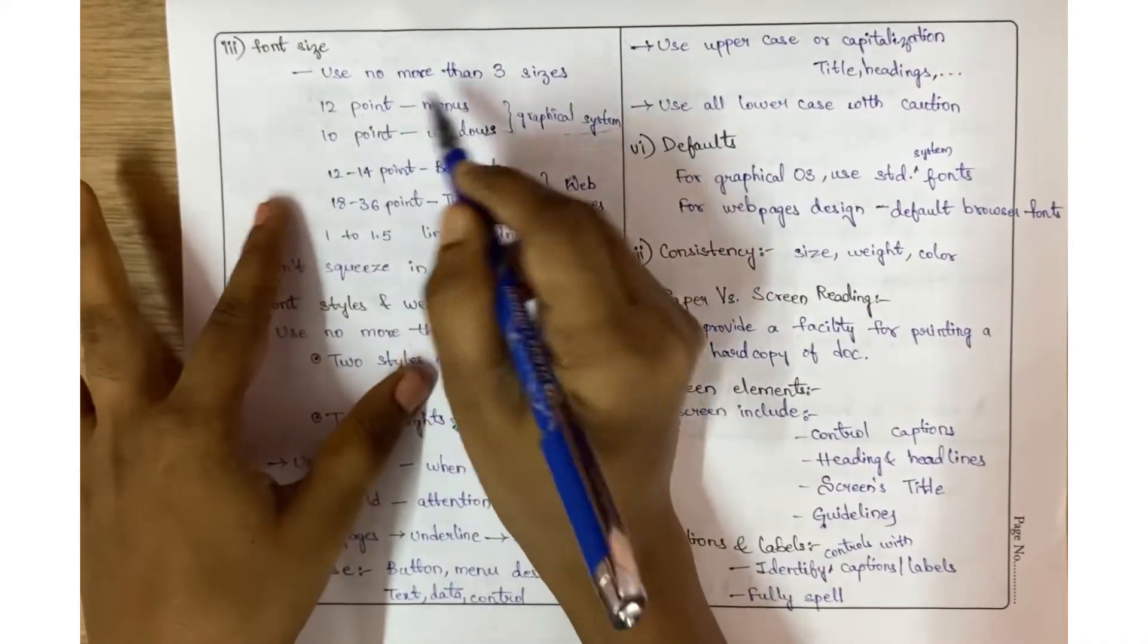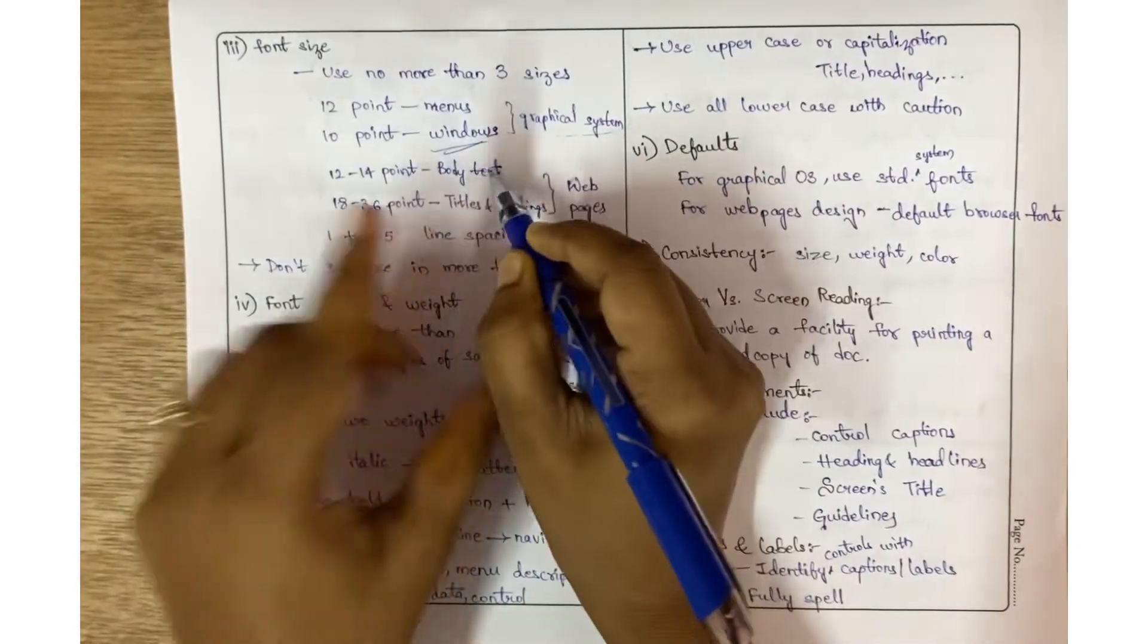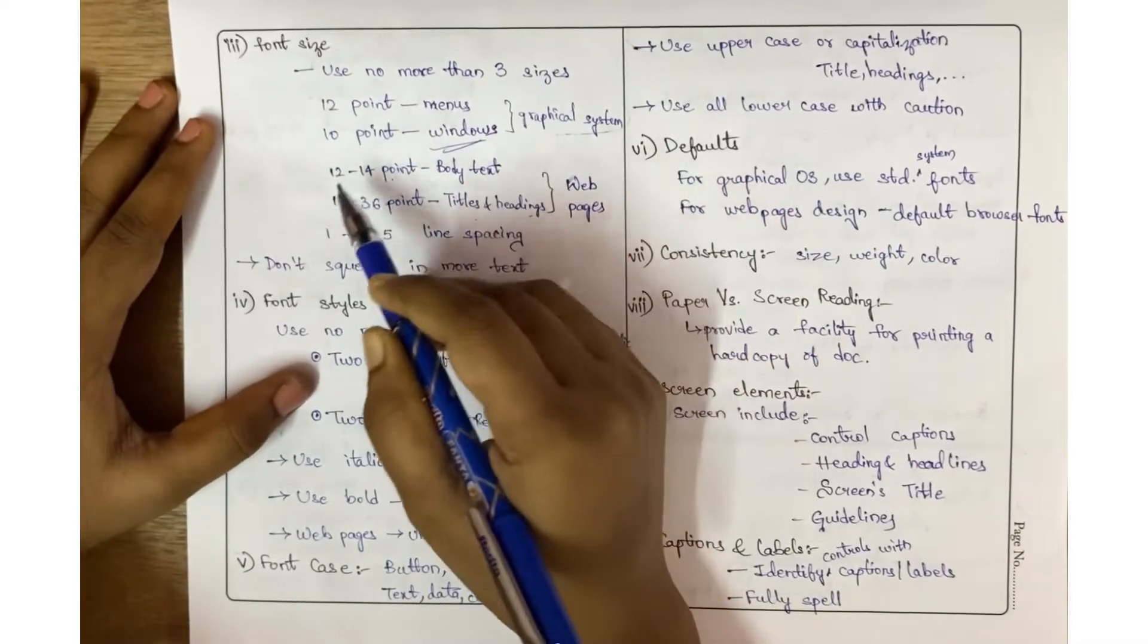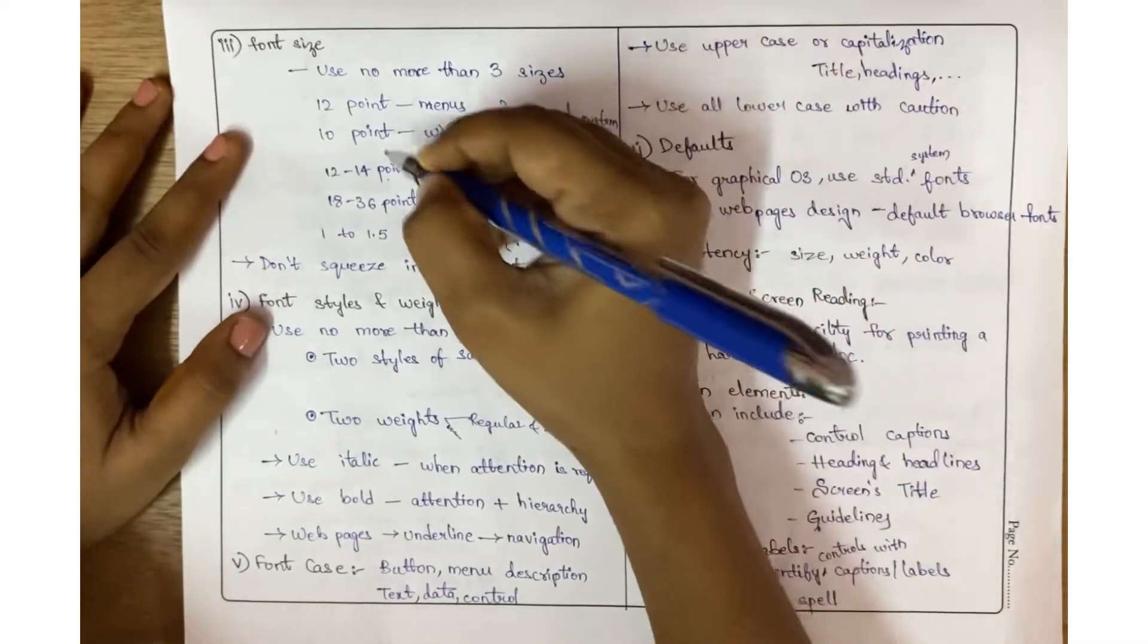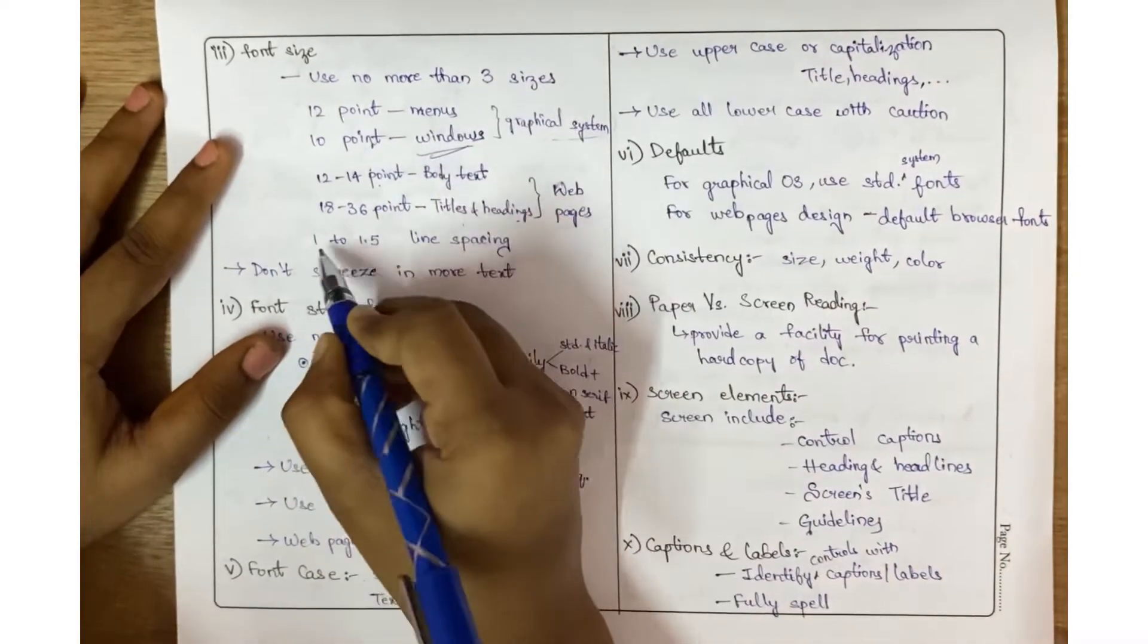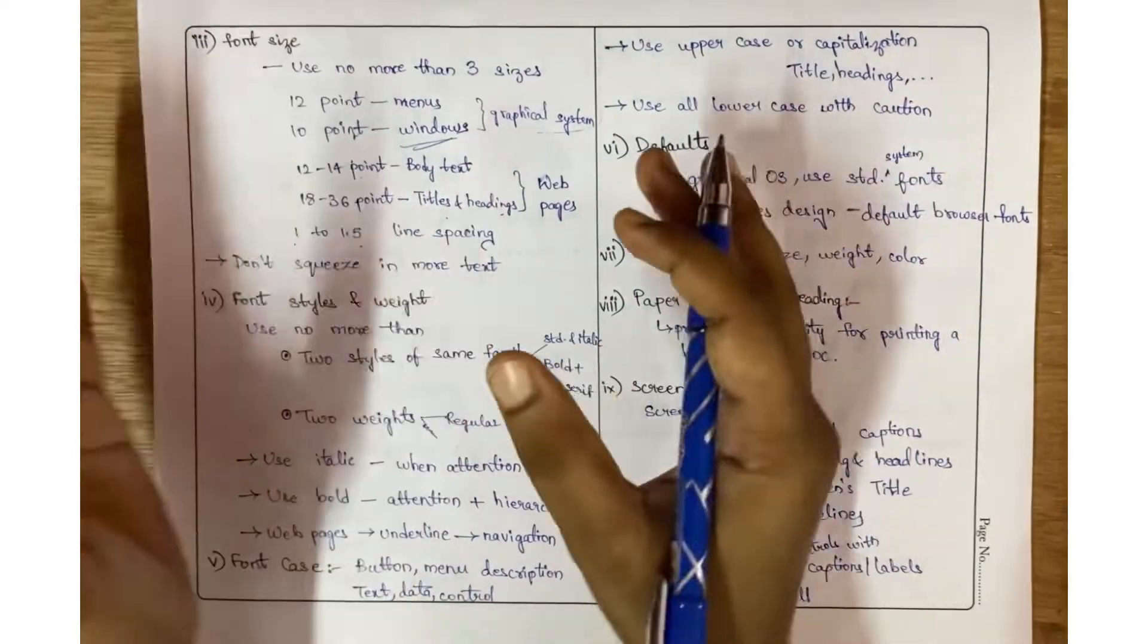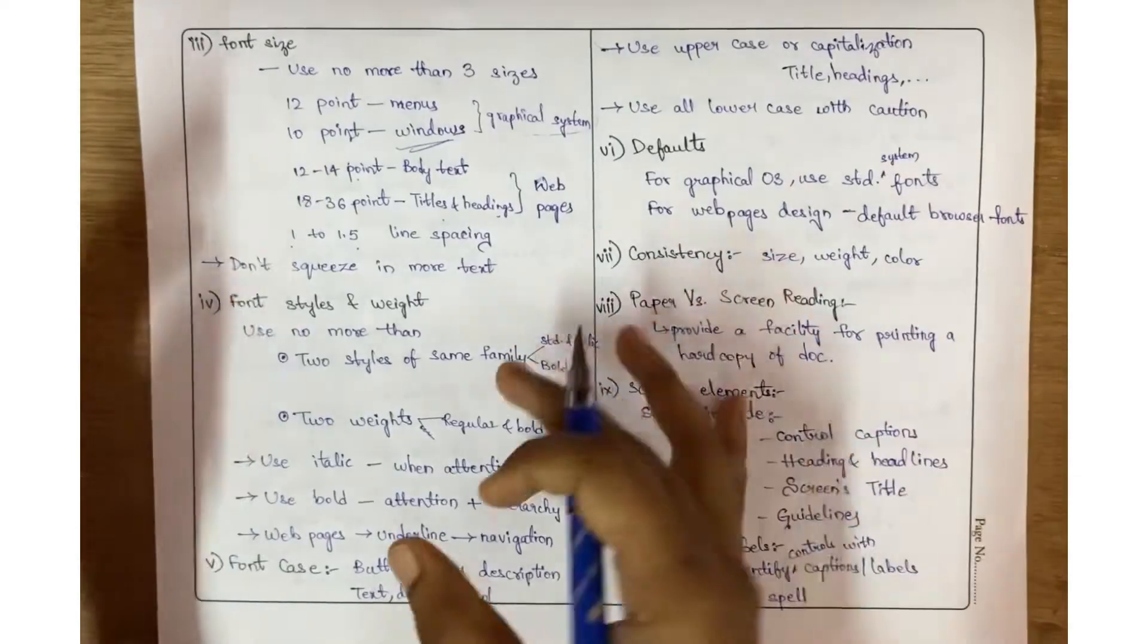For graphical systems, the menus should be 12 point size, windows should be 10 points. In web pages, the body text must be 12 to 14 size, and the titles and headings must be 18 to 36 in that range. Line spacing between two lines must be 1 to 1.5, and don't squeeze in more text by choosing less size to fit more data into the page.